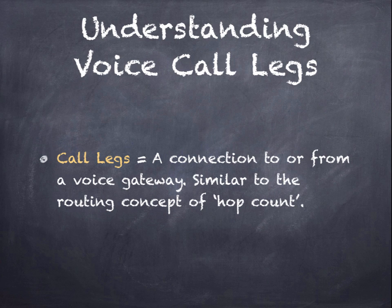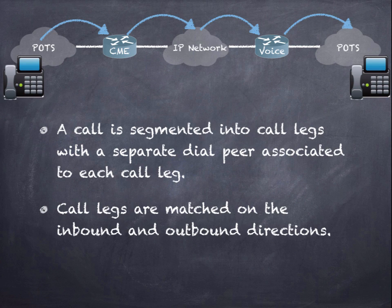A call leg is the concept of a connection to or from a voice gateway — things egressing or entering your VoIP network. It's the same concept as hop count in routing protocols. The number of call legs defines how far the destination is across your VoIP network. In our simple example, we have a CME router on the left, a voice-enabled router on the right, a standard IP network between them, and a POTS phone attached on either end.